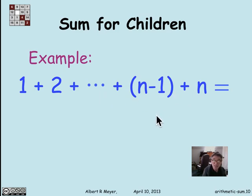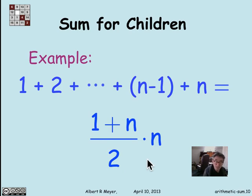And according to our formula, it's the first plus the last over 2 times the number of terms. And we have that familiar formula for the sum of the first n integers.